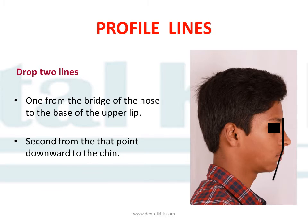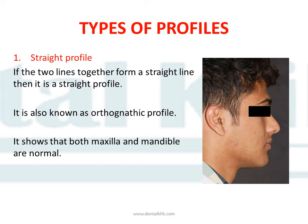Examining these two lines, we have various types of facial profiles. The first is the straight profile: if the two lines join together and form a straight line, it is called a straight profile, also known as an orthognathic profile. A straight profile shows that both the maxilla and mandible are in a normal relationship with each other and with the cranial base.